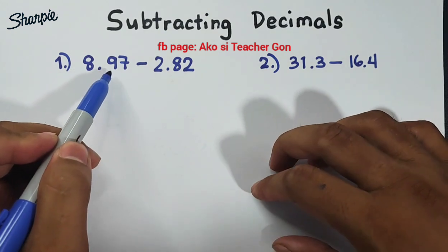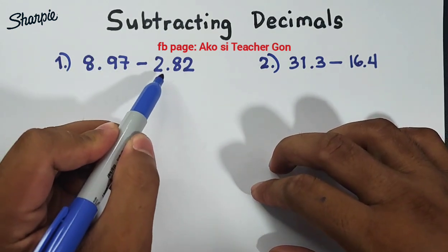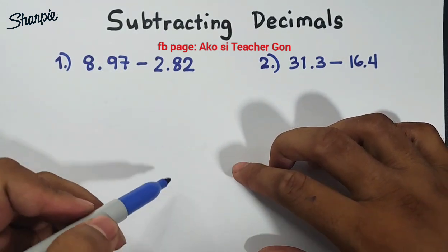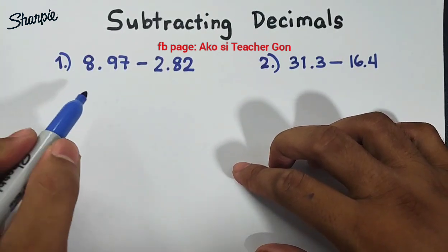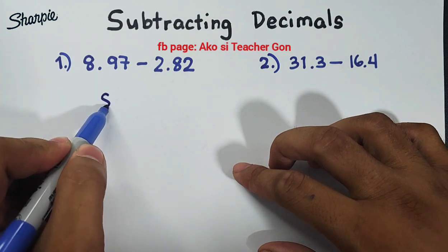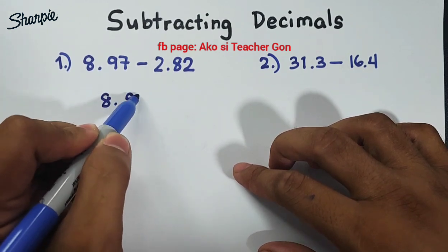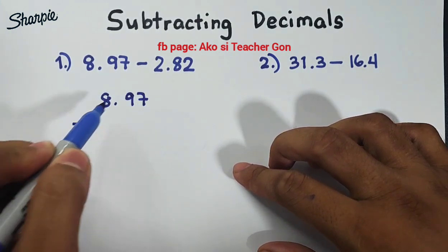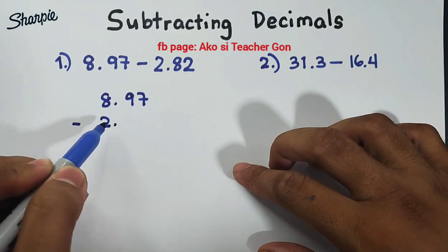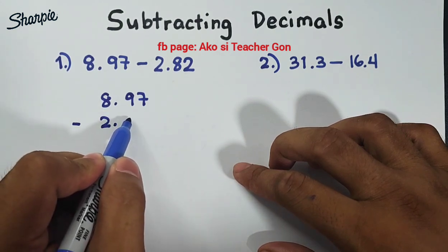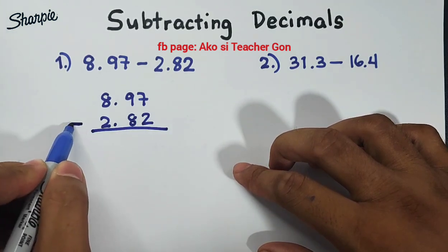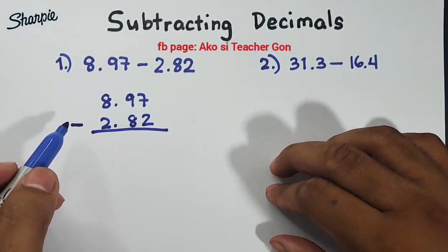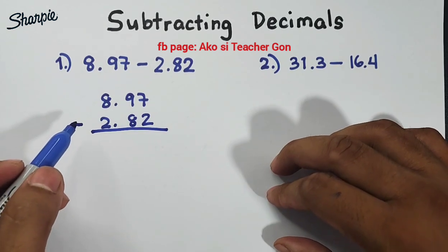In number one we are given 8.97 minus 2.82. First thing you need to do is to write these decimals vertically so we will have 8.97 minus 2.82. Basically guys the basic rule here in subtracting decimals and addition of decimals, you need to align their decimal points.